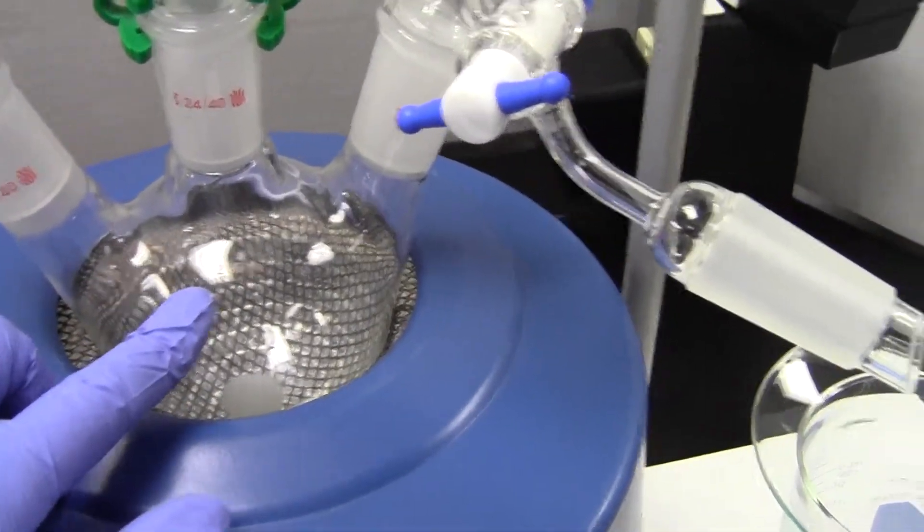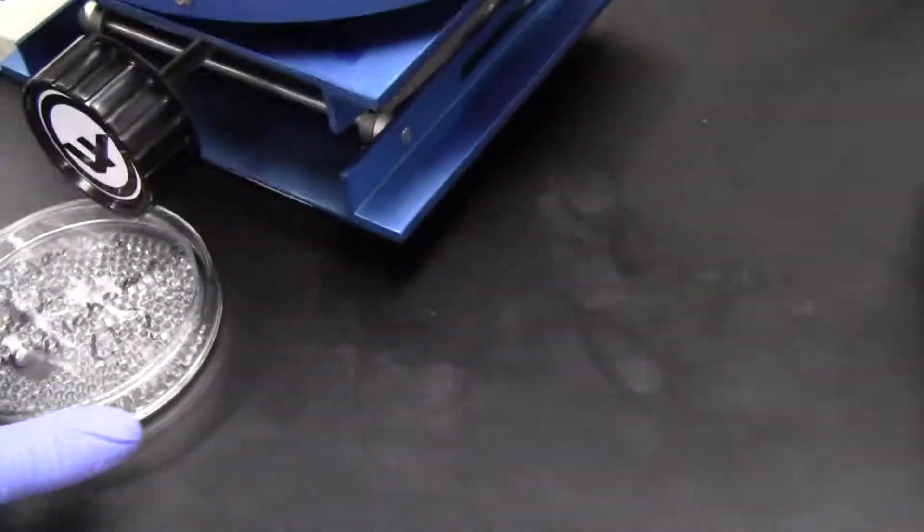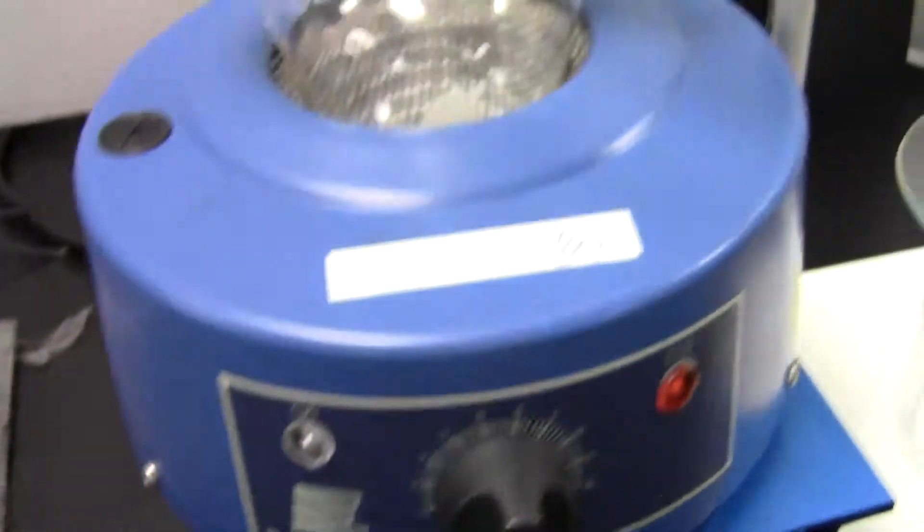This will bump. There are glass beads here, so you want to put some glass beads into your flask. That'll prevent bumping because this is not being stirred while you're boiling it.